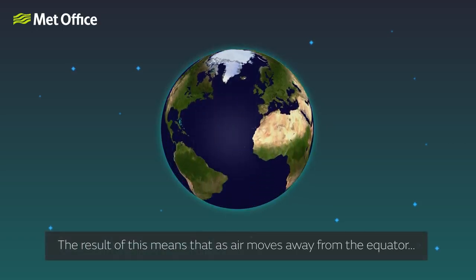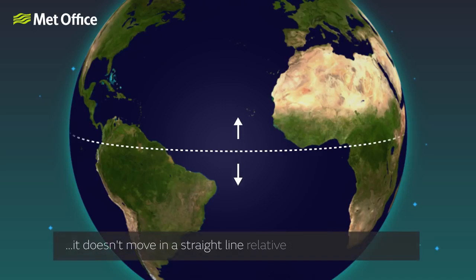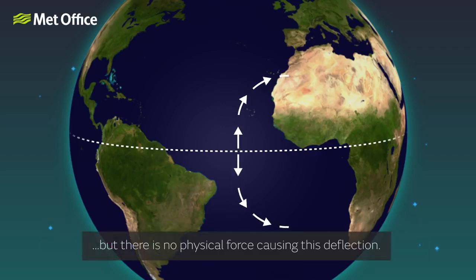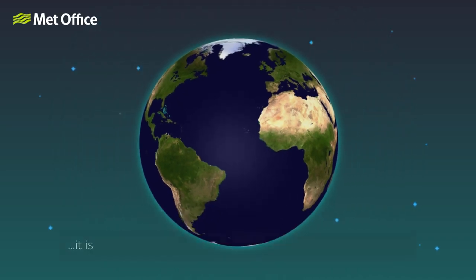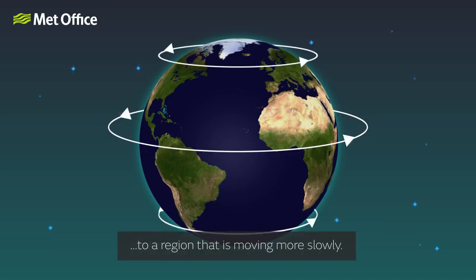The result of this means that as air moves away from the equator, it doesn't move in a straight line relative to the Earth's surface. Instead, it appears to an observer on the ground to move in a slightly curved direction. But there is no physical force causing this deflection — as the atmosphere rotates with the Earth, it is just due to the air flowing from a region that is moving faster to a region that is moving more slowly.